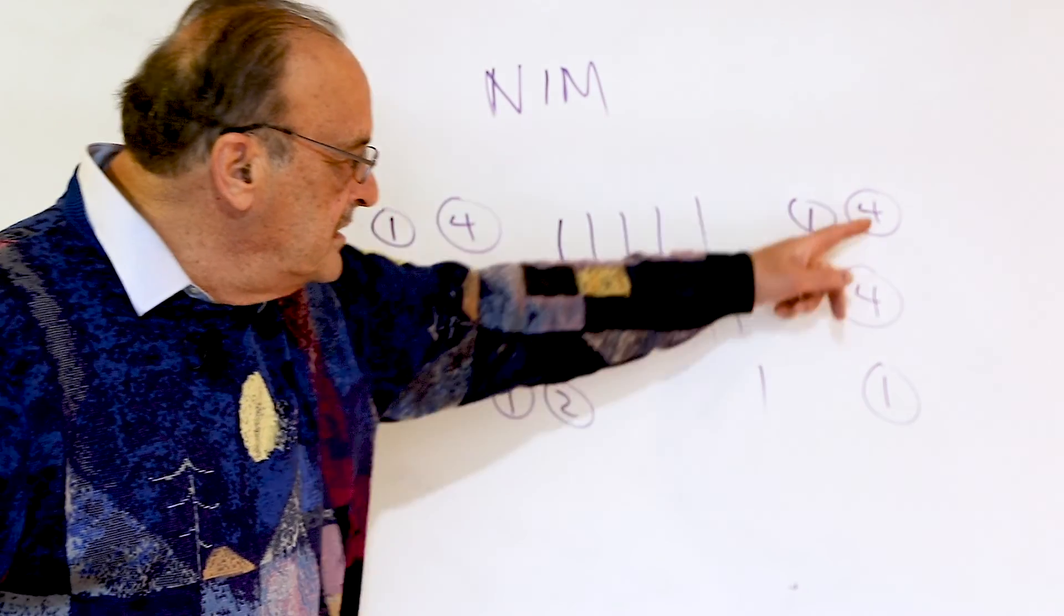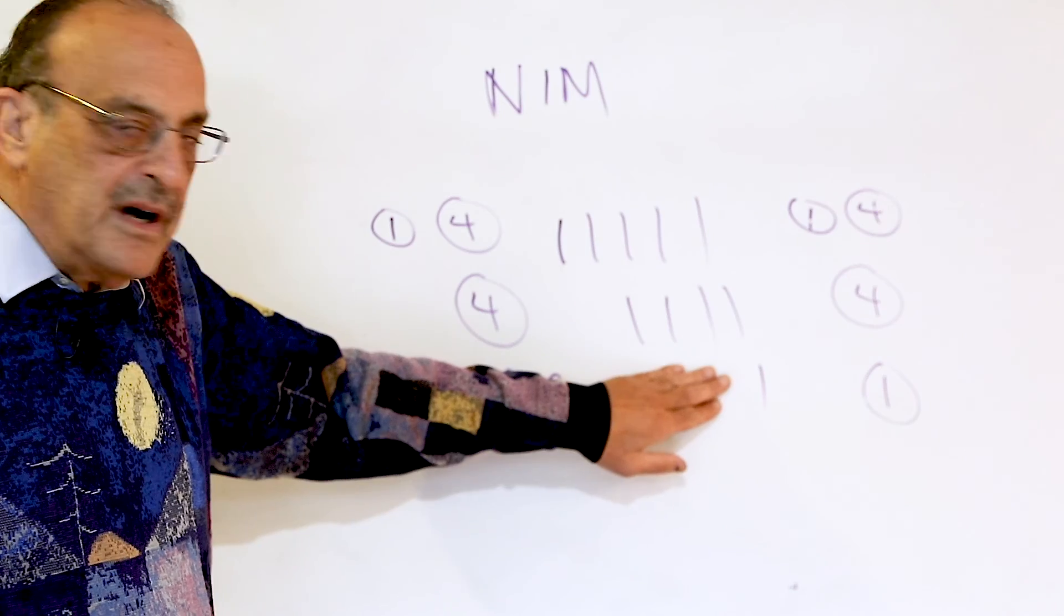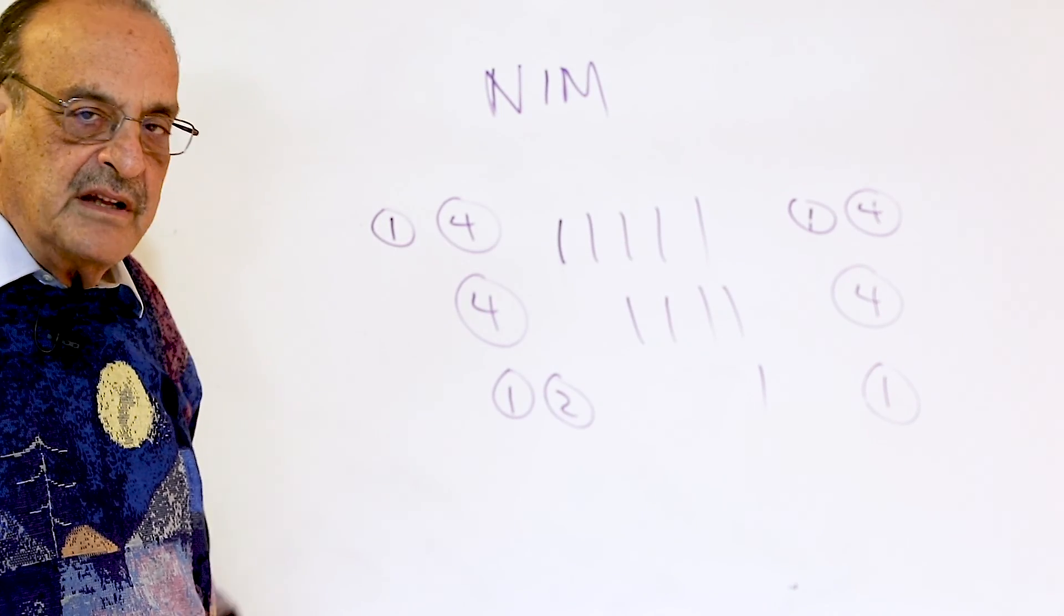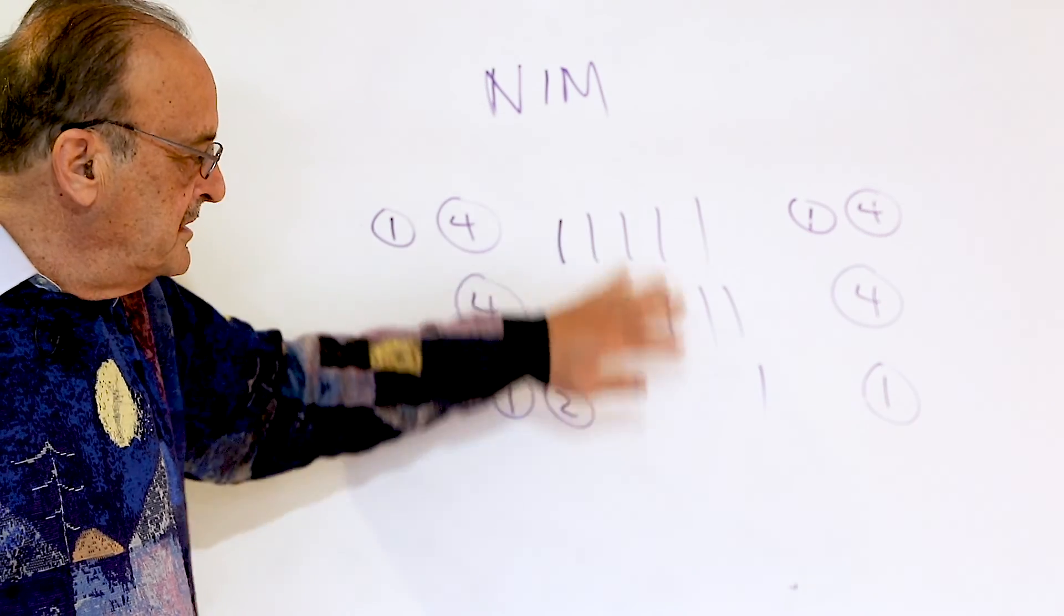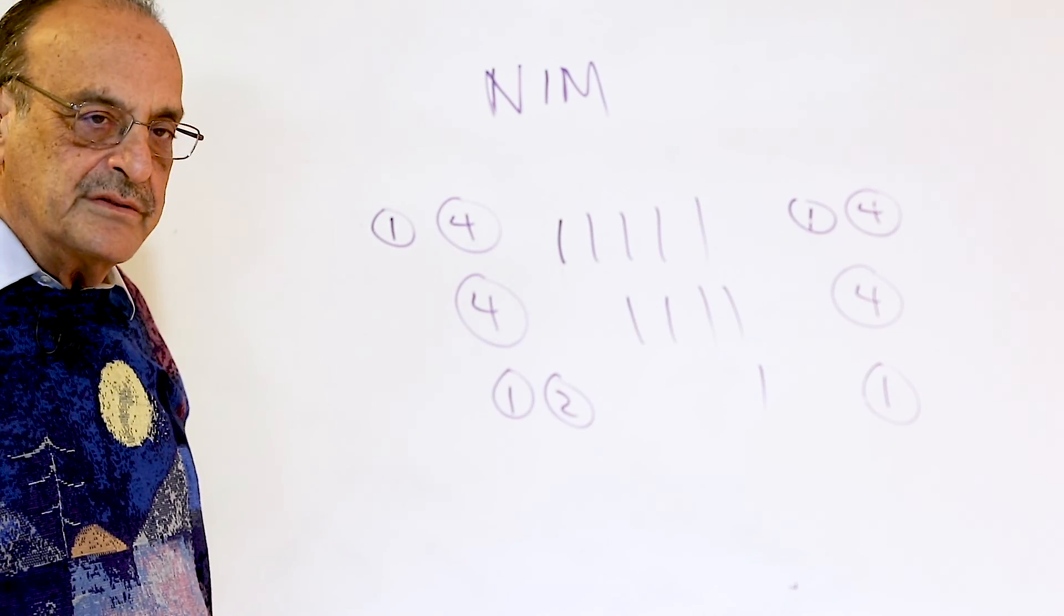So again, everything's even. So if my student took 2 from the bottom, my student would have the chance to win. They'd have to continue to play perfectly, but they would have a chance to win now. Otherwise, if they did anything else, they would definitely lose.